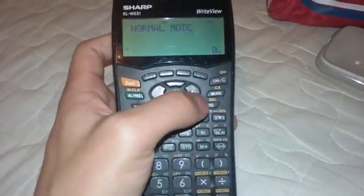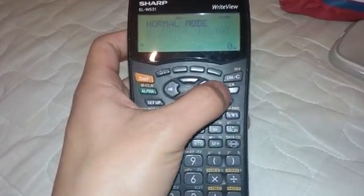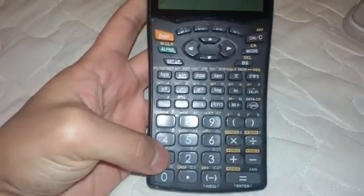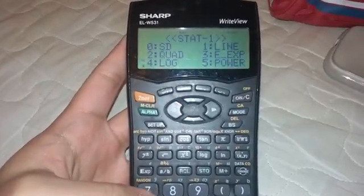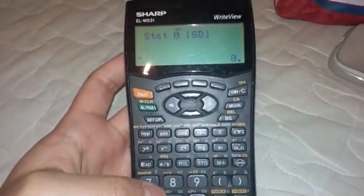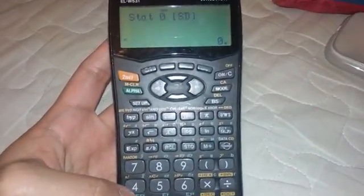First and foremost, you need to get it into standard deviation mode. On this Sharp calculator, press the mode button and bring up the stats. Press number one, then press zero for standard deviation SD. Now we need to enter the data set.